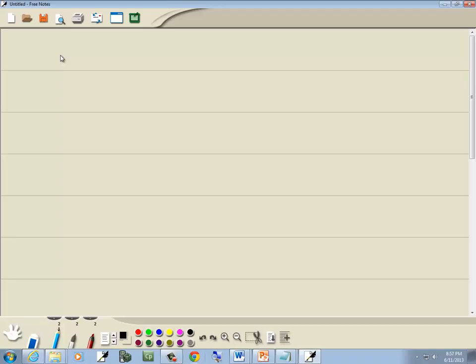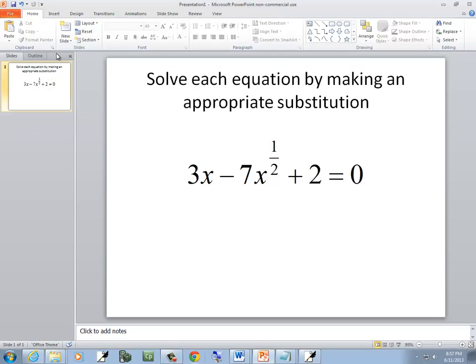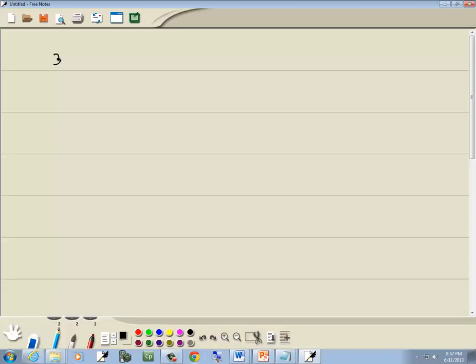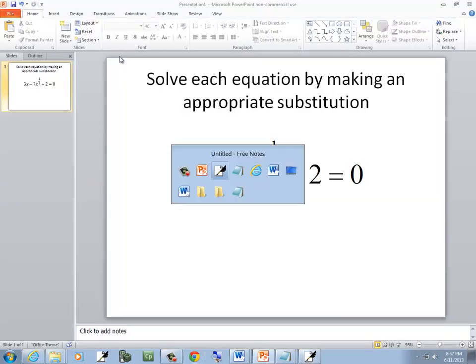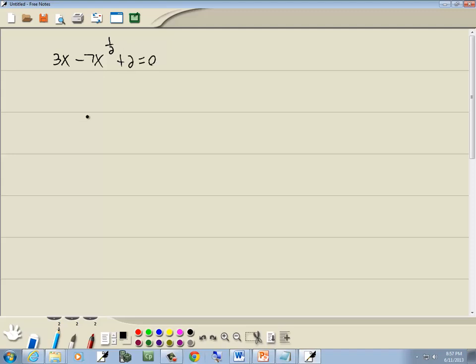Let's take a look at this problem. We've got 3x minus 7x to the 1 half plus 2 equal to 0. And I want to solve this using a u substitution.